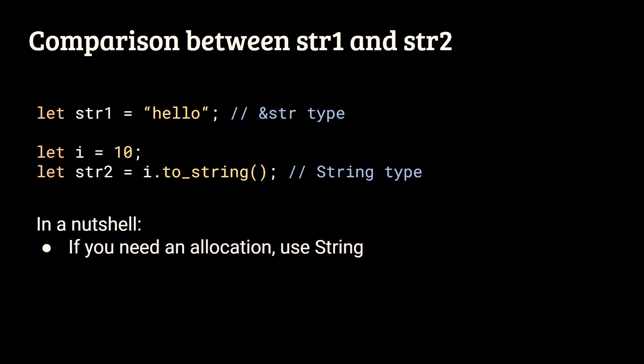As a rule of thumb, any time you need to allocate new memory, you will need to use the string type. Whereas if you only need a different view of an existing string, the string slice type will be more adequate.